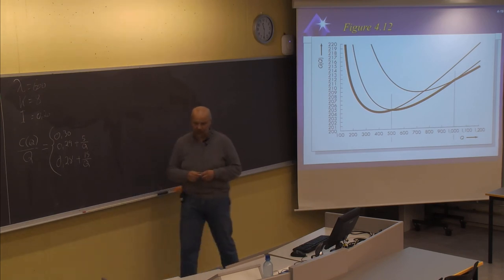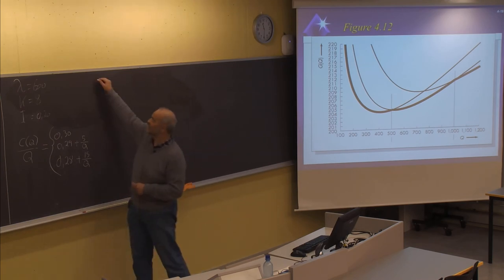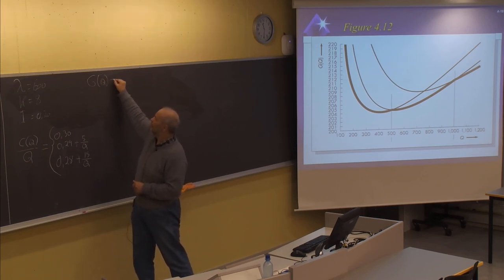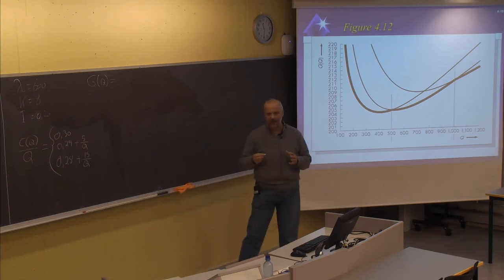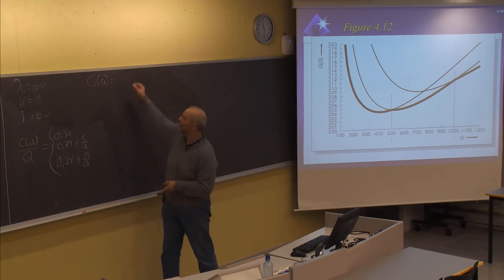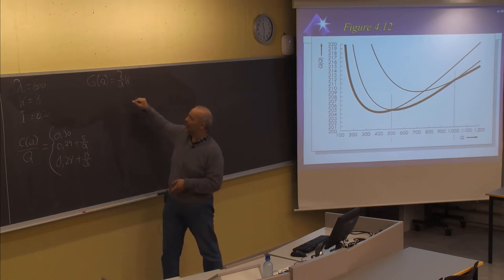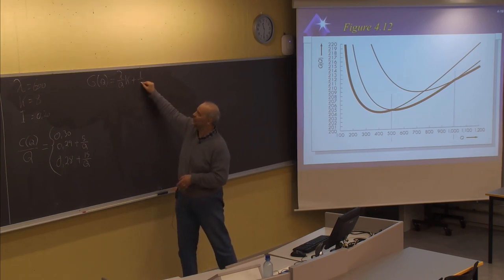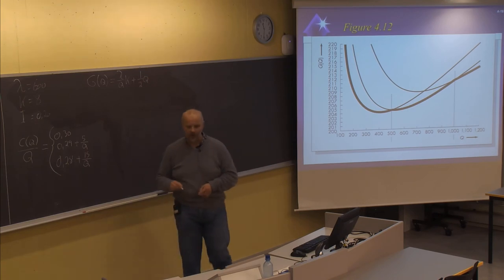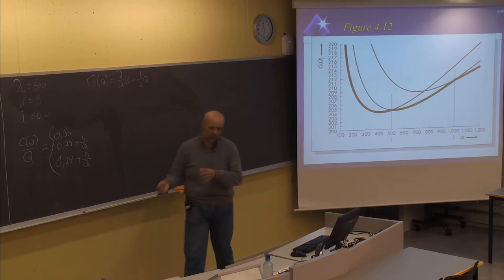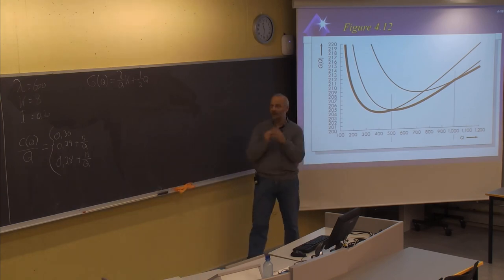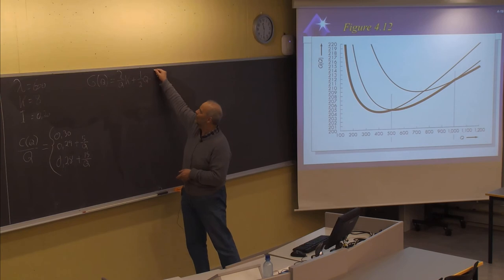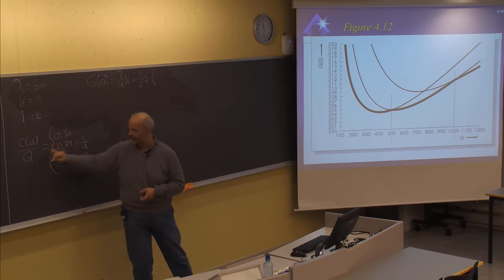Looking at the average annual cost, G(Q), the cost function depends on the ordering cost as usual: demand divided by order size multiplied by K, plus the holding cost. The holding cost is the average stock size multiplied by the interest rate — that is, the product of the interest rate and the unit cost. Now the unit cost will be the expressions shown, C(Q) divided by Q, multiplied by the interest rate.